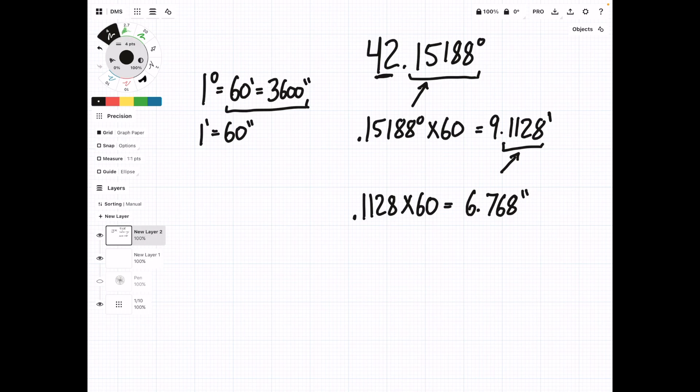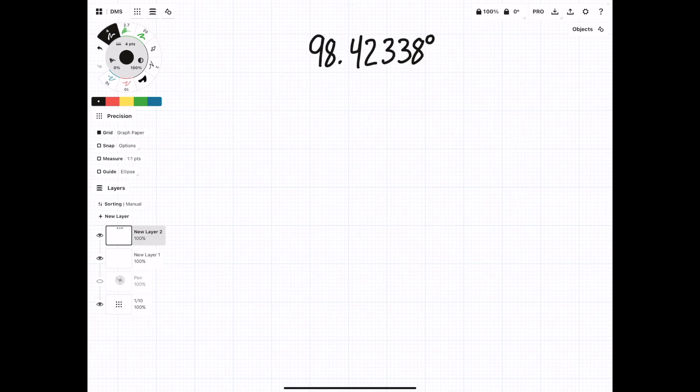And that gives us 6.768 seconds. So, now if we write out this original degree value, we get 42 degrees, 9 minutes, 6.768 seconds.